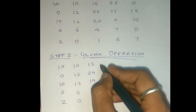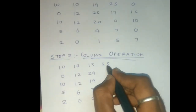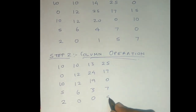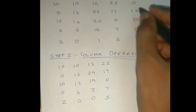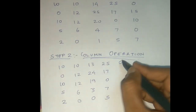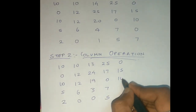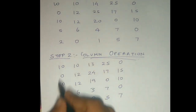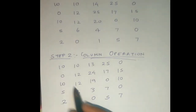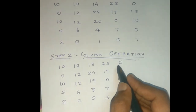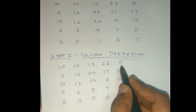Now the least number is 0, so this is the updated column. We get 17, 0, 7, 5. The least number is 0, so we apply the minus operation. Then the column operation is complete and we have to mark the columns and rows.